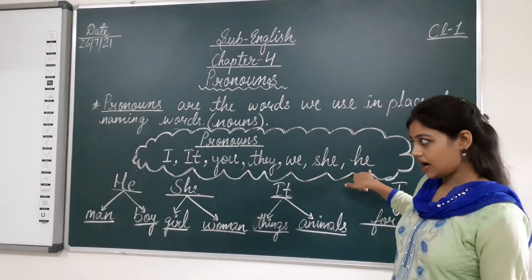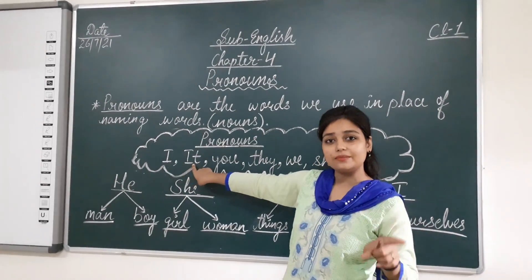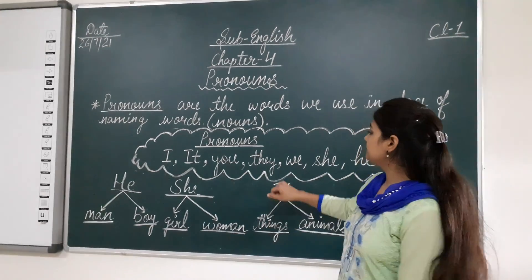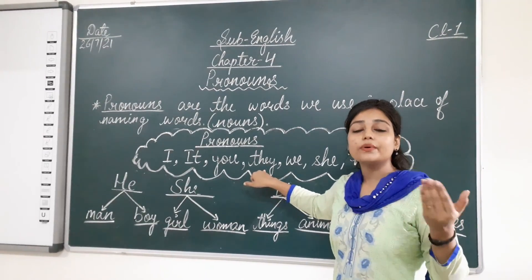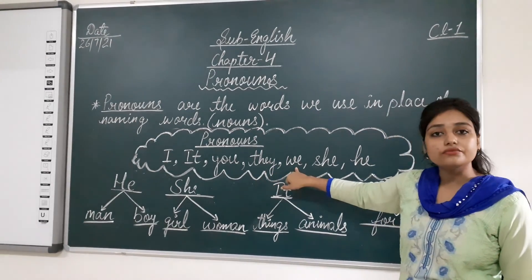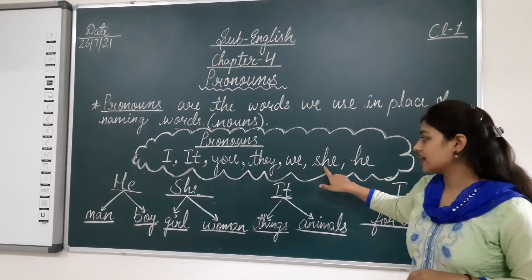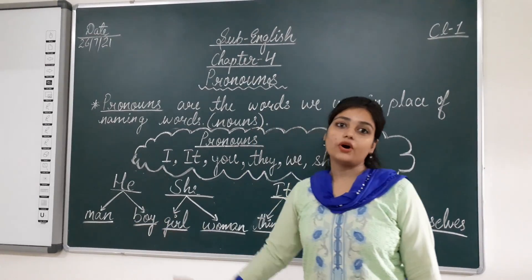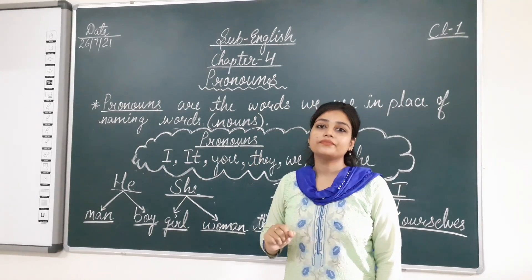So, these were your pronouns. I is for ourselves. It is for animals and things. You is when we talk to one or more than one person. They replaces plural nouns. We includes the speaker. She is for a girl or woman. He is for a man or boy. This was your chapter on pronouns. I hope this is clear. Thank you.